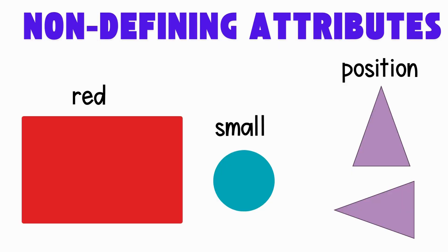A non-defining attribute is something we can notice about a shape, but it does not tell us what kind of shape it is. Examples of non-defining attributes are color, like red, blue, or green, size, like big or small, and position, like turned, flipped, or sideways.